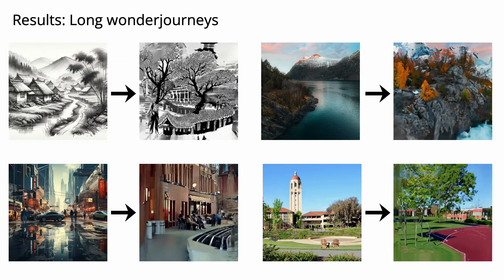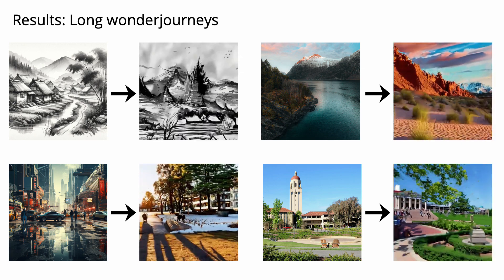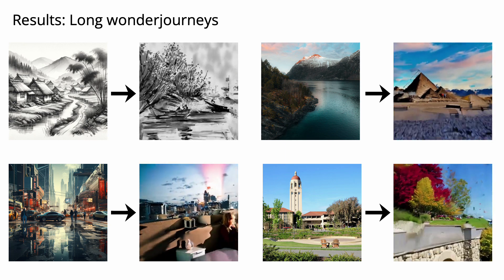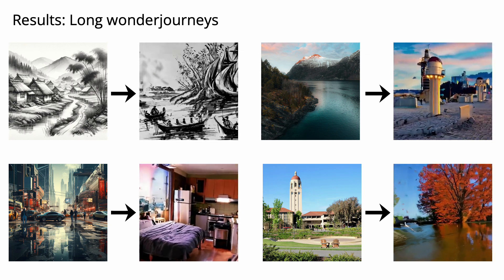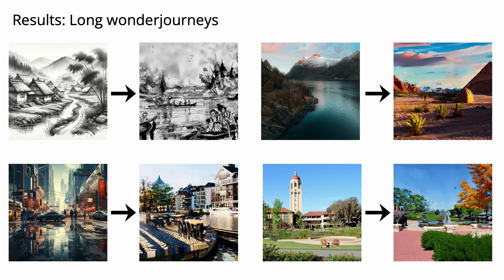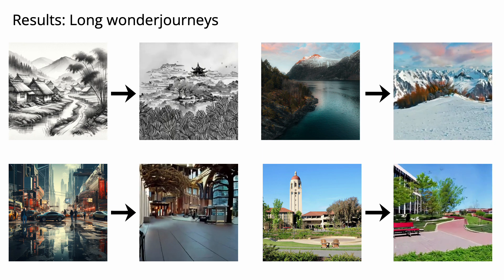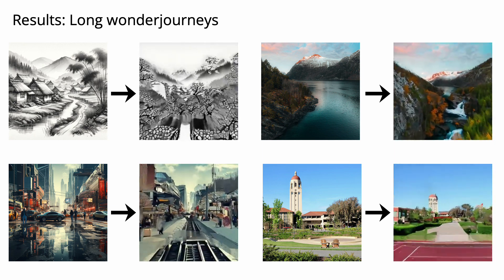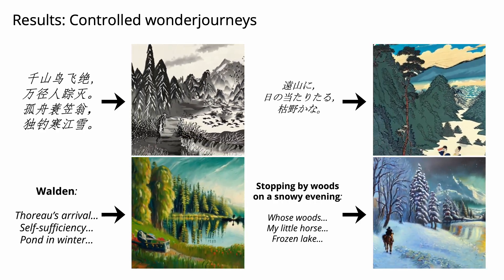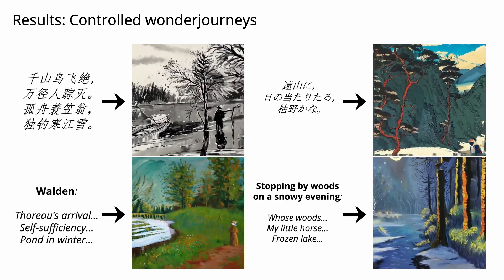We can also generate super long Wonder Journeys — each video is generated from 40 3D scenes. Here we show a few examples. We can also use poems, haiku, or book abstracts with the language model to generate controlled Wonder Journeys.